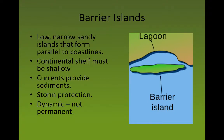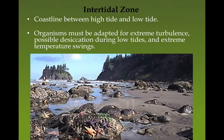Barrier islands form offshore from lagoons or estuaries, where sediments brought by rivers are deposited and washed into islands. They are not permanent — people who build on them need to understand they'll change dramatically depending on storms, though they also serve as storm protection. The intertidal zone is the area between the high tide and low tide marks. Organisms here face lots of wave action, desiccation when the tide is out, and huge temperature swings, making it a tough but interesting environment.